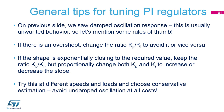If the shape is exponentially nearing to the required value, we can keep the KP/KI ratio, but we proportionally change both KP and KI to decrease or increase the slope. One recommendation: we shall try this at different speeds and loads and choose conservative values for KP and KI to avoid undamped oscillations at any part of the load curve.